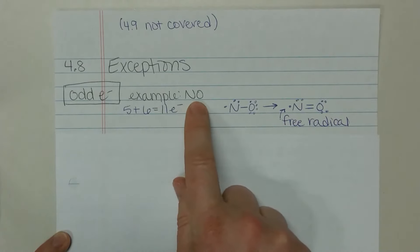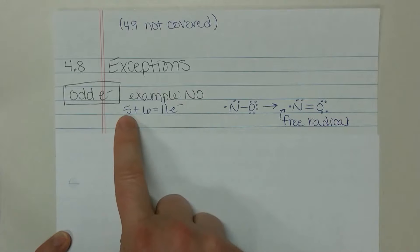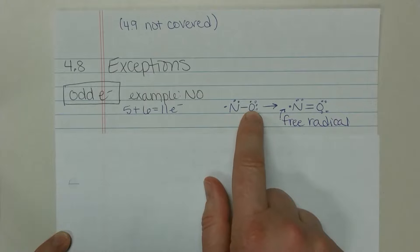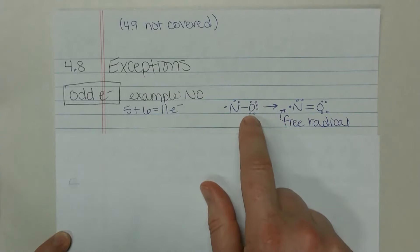So if we have nitrogen monoxide here, we have five valence electrons from nitrogen, six from oxygen, for a total of 11 electrons. Our skeletal structure: we have nitrogen single bonded to the oxygen. Complete the octet on the oxygen.